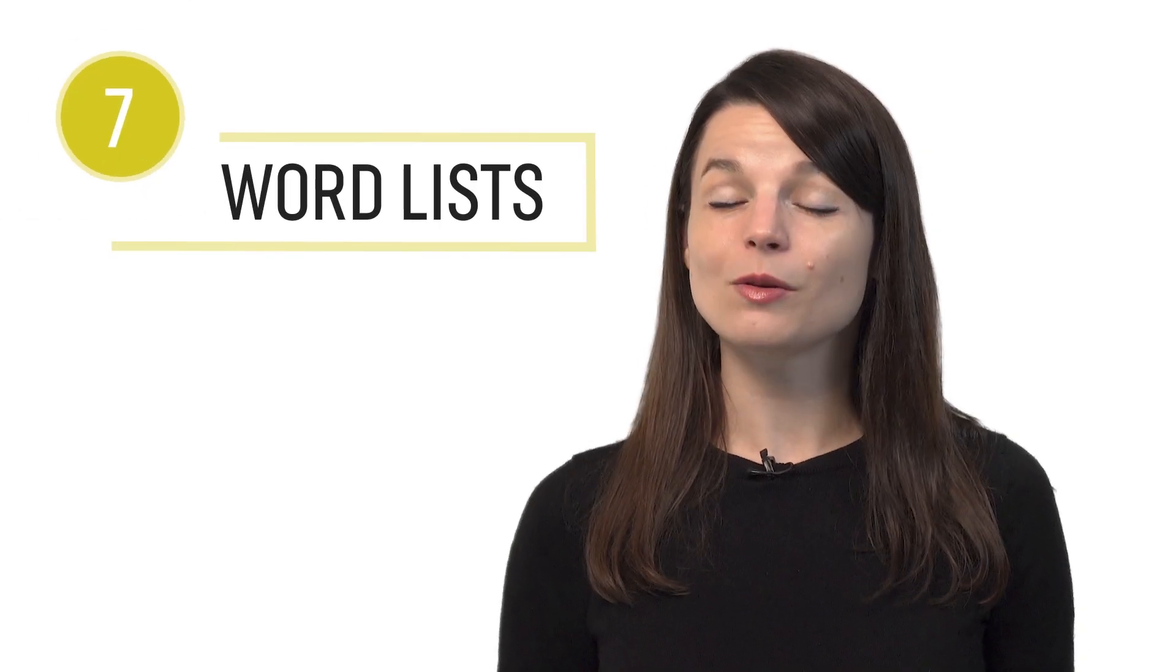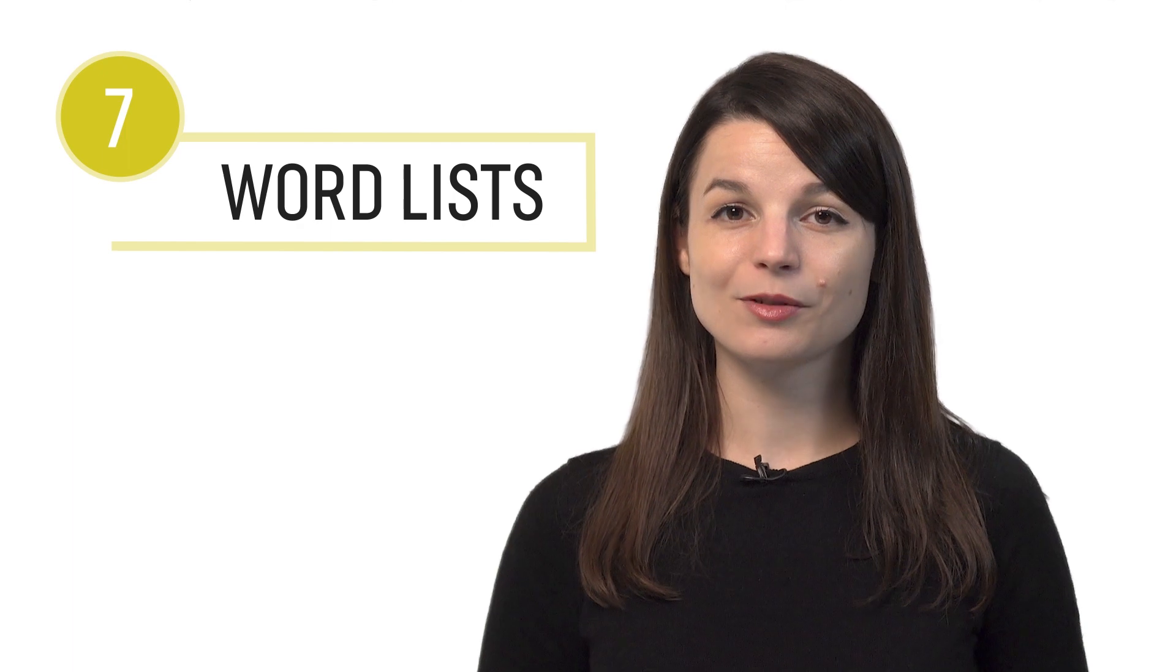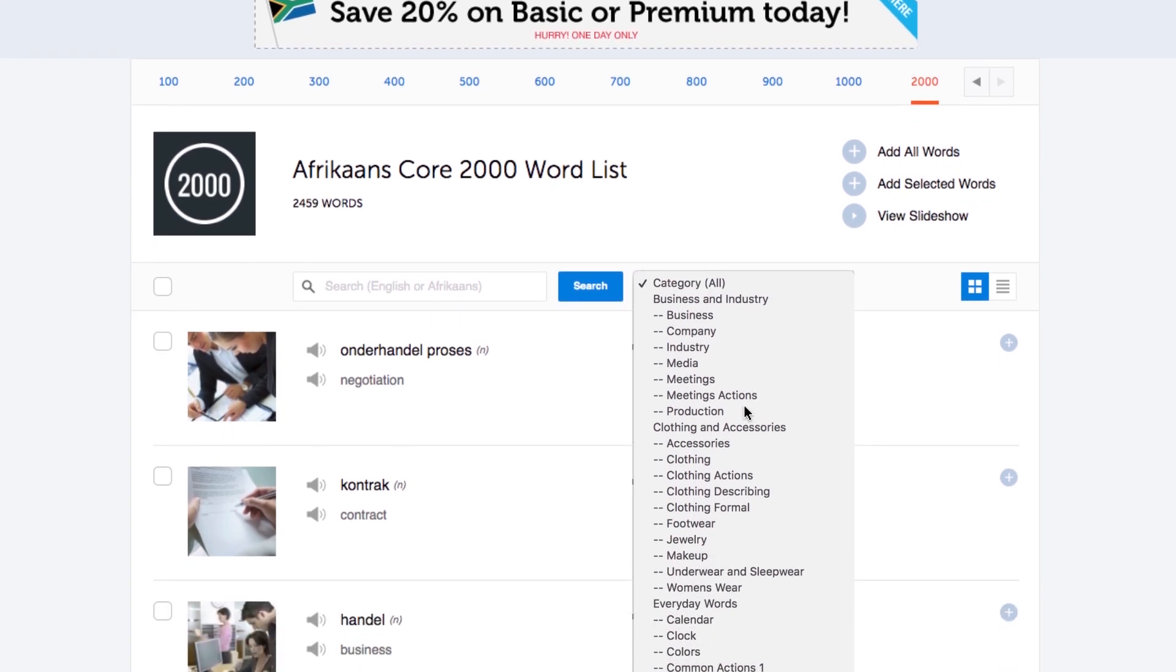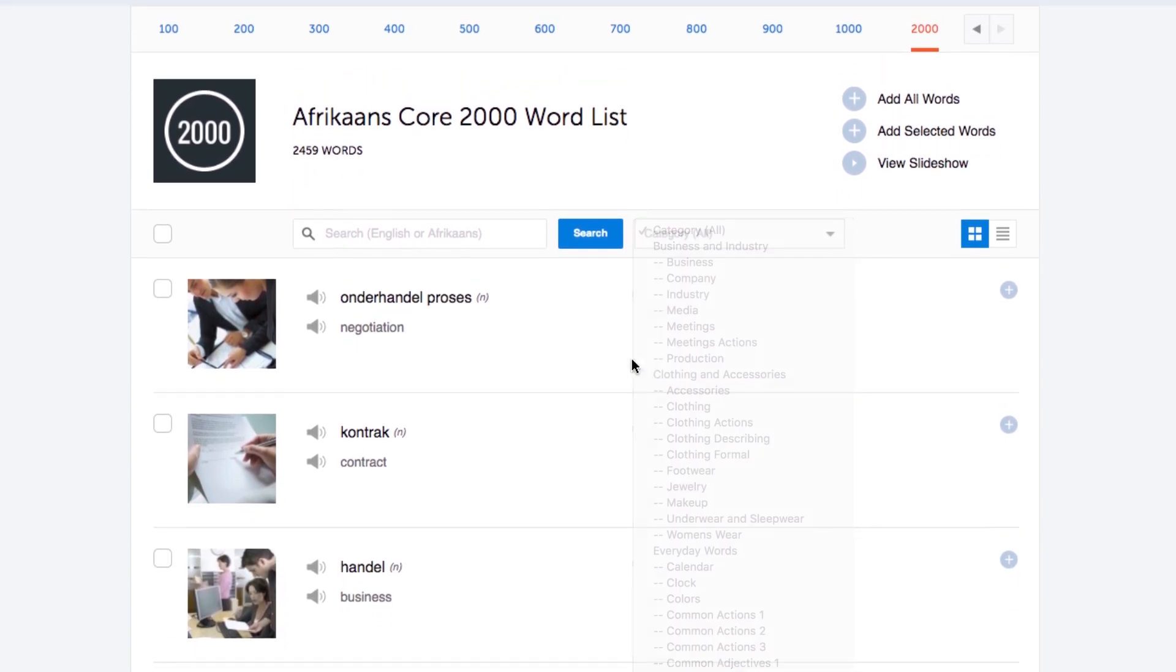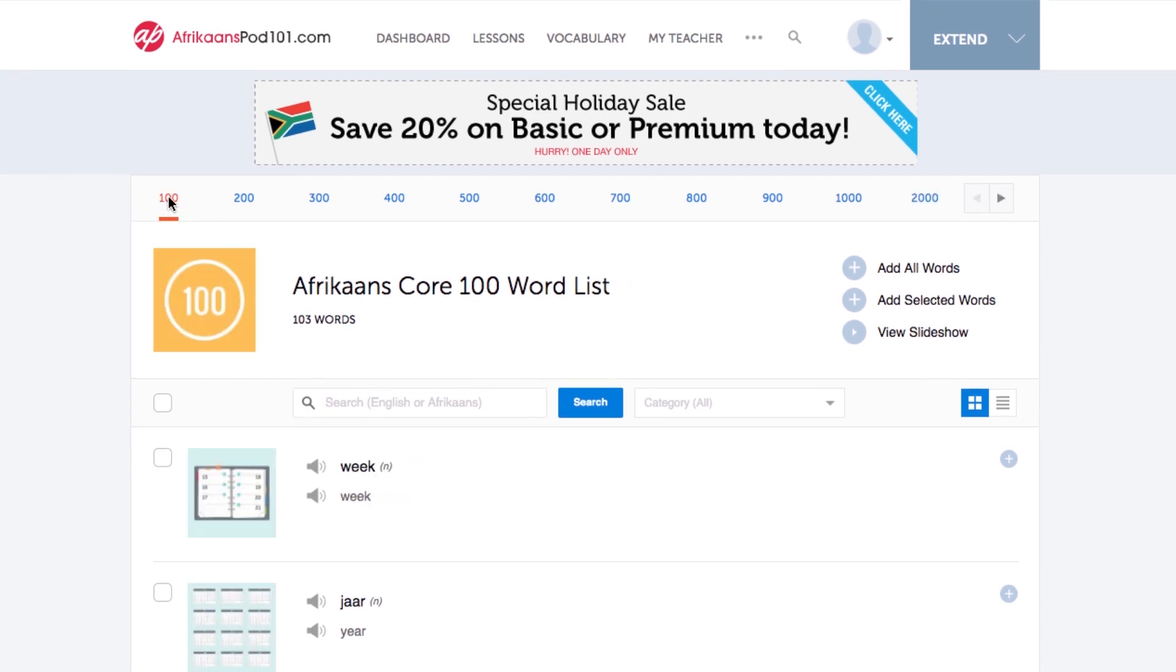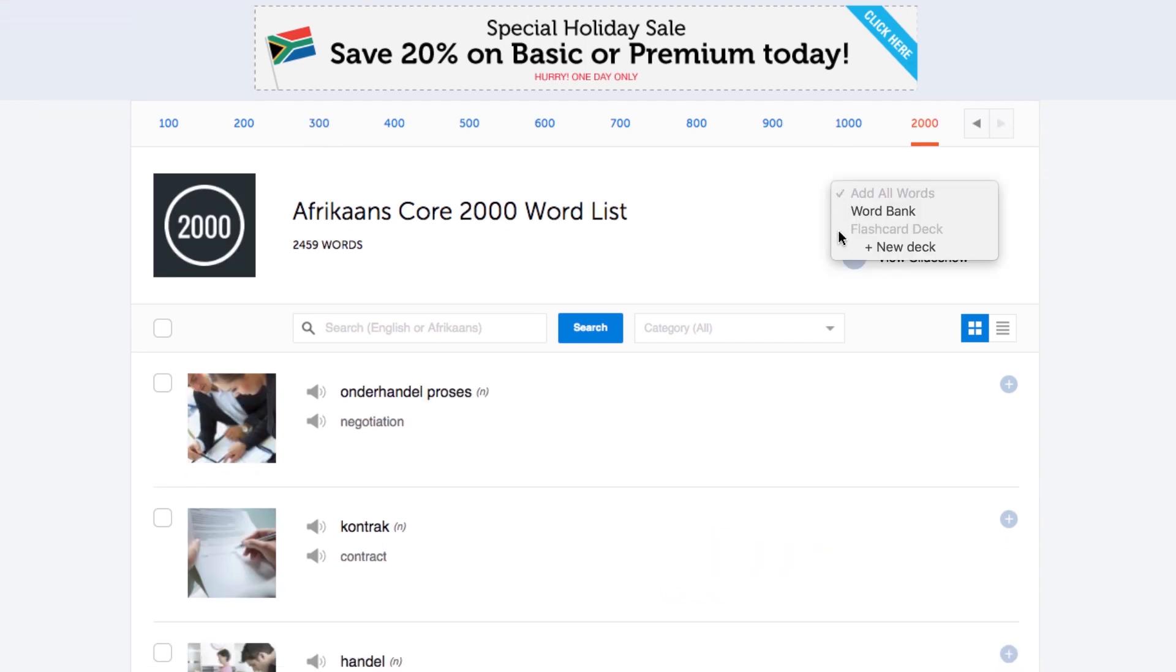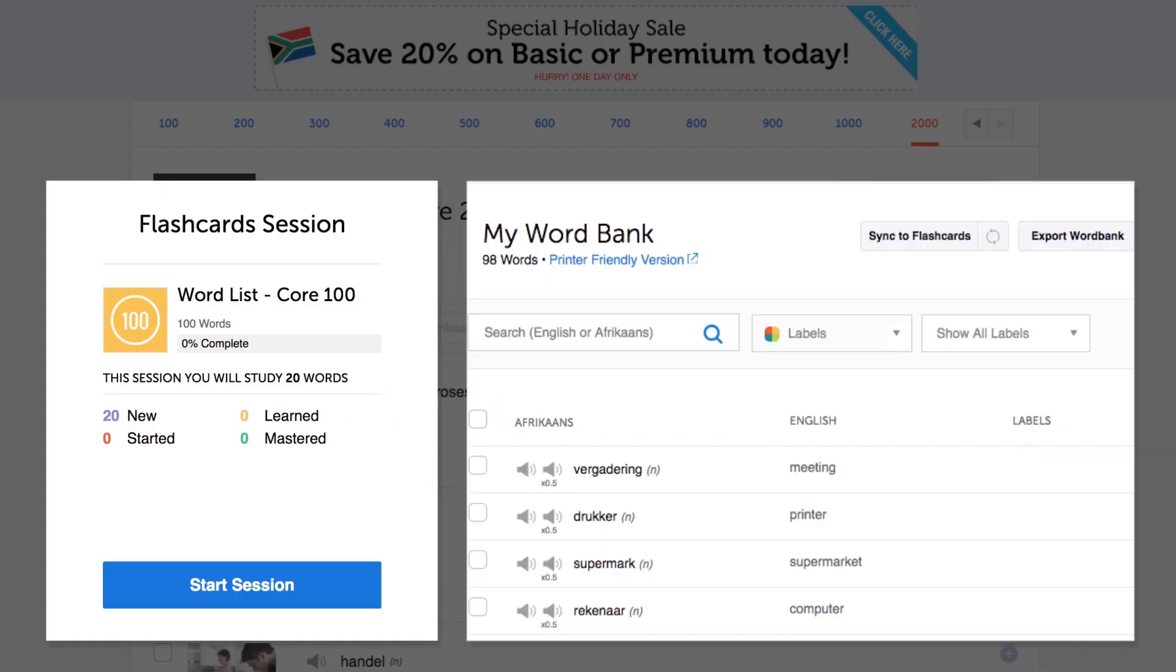Number seven, get the 2,000 most common words list. Language experts say you need around 1,500 words to be conversationally fluent. Here you get 2,000 must-know words sorted into categories such as verbs, adjectives, and everyday words, even numbers. You'll see the top 100 words, the top 200, 300, up to 2,000. You can study these words with the slideshow or send them to the word bank or flashcards.